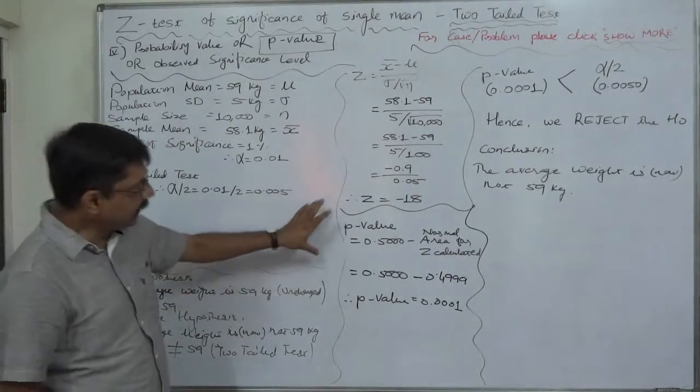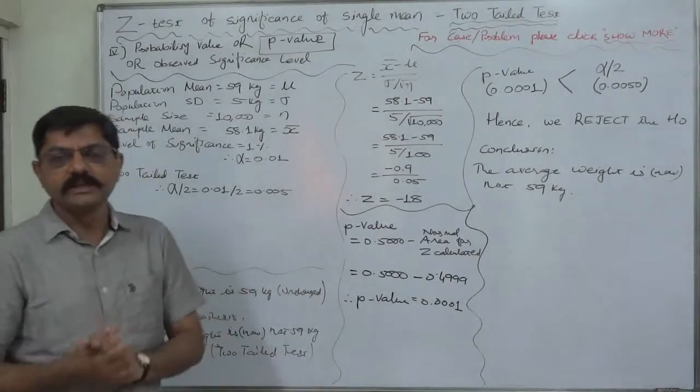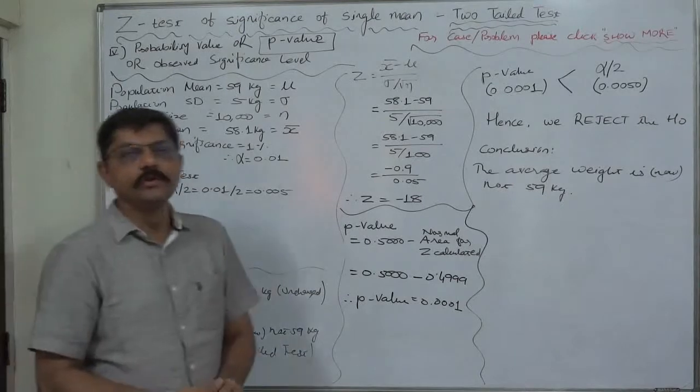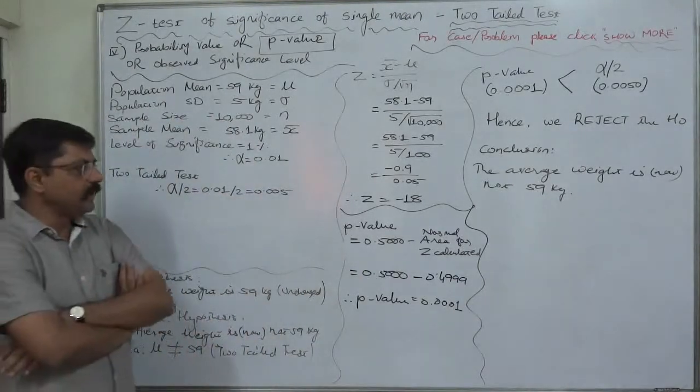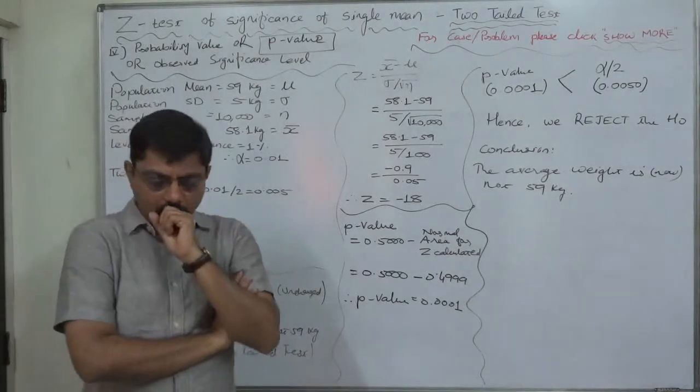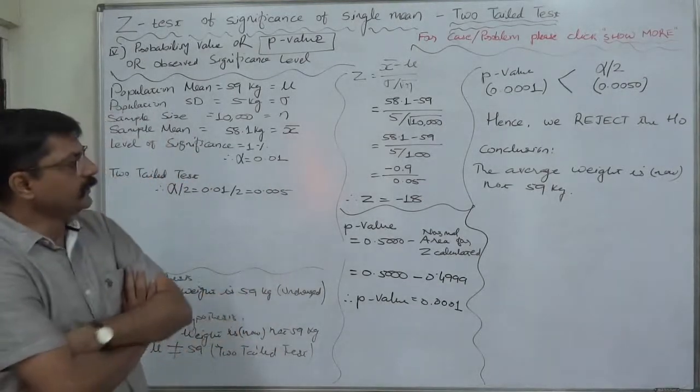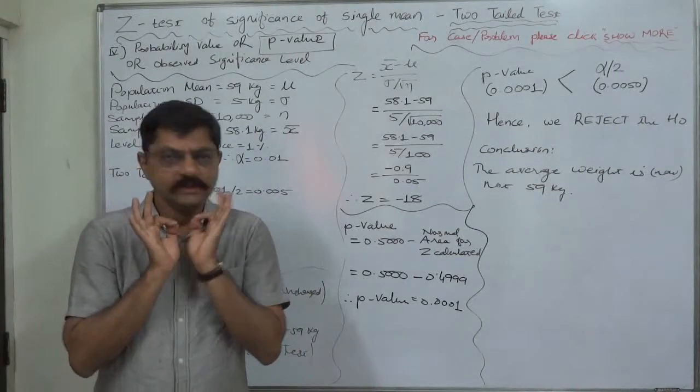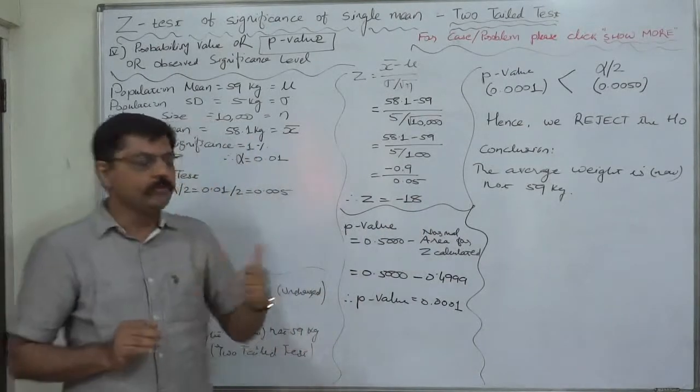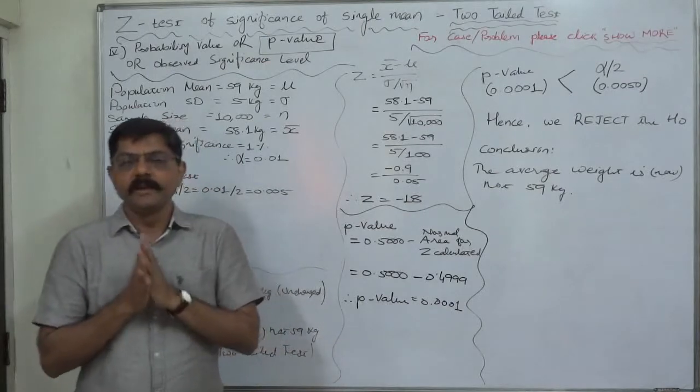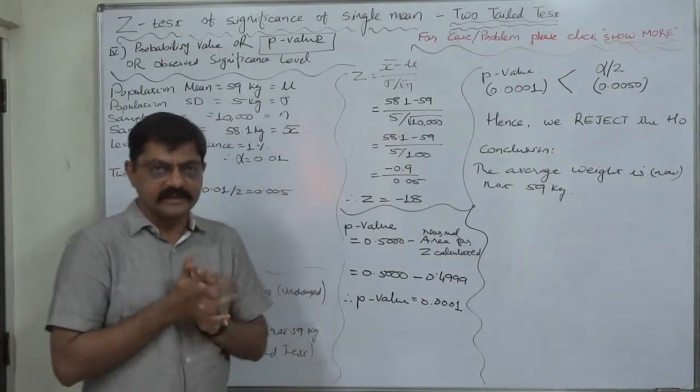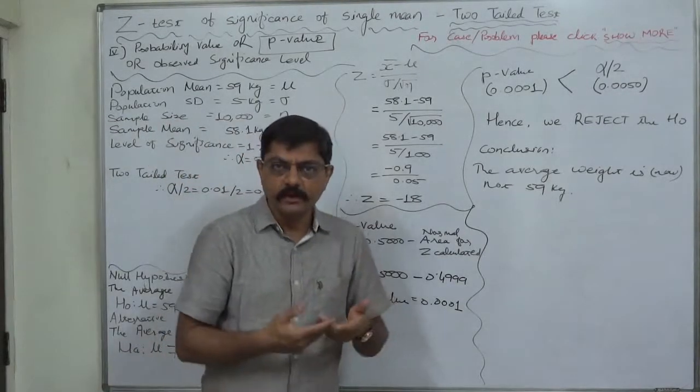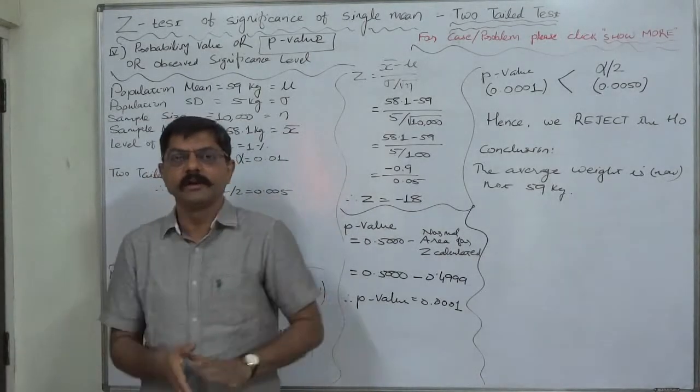So, this is p-value method and in the last four lectures, we discussed four different methods of arriving at the conclusion in case of test of hypothesis. All the four methods can be used in case of any. Now, if you ask me which method I prefer or I find most suitable. The method of comparing observed value of the test statistic and critical value is the best according to me. Just, I advise to use sign of modulus whenever you get the negative value of test statistic.